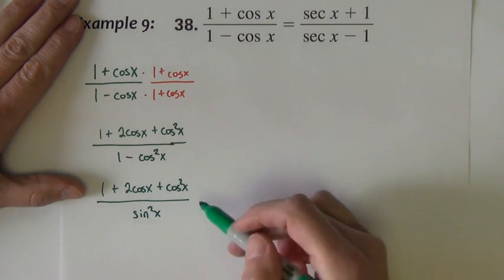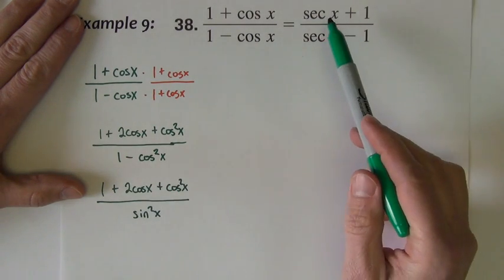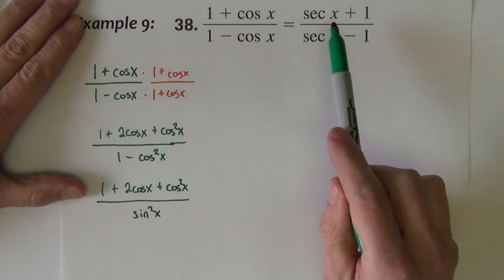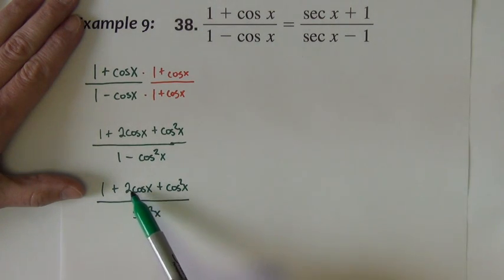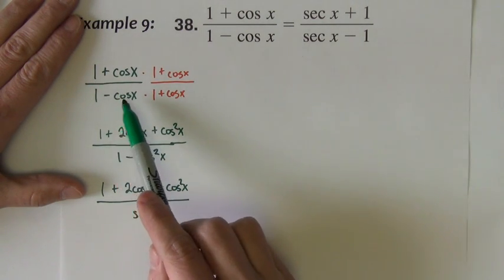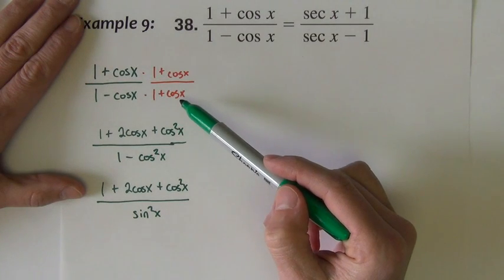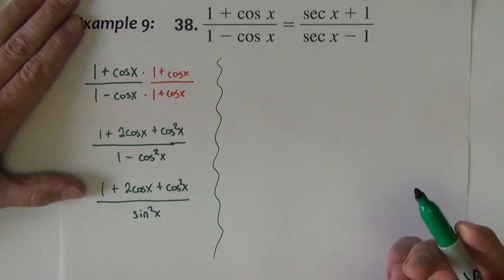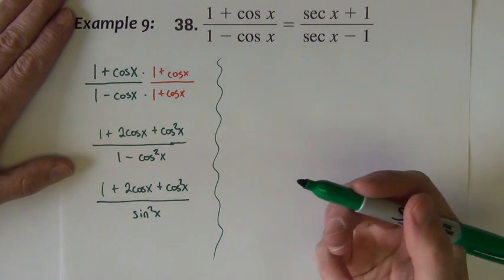But we're not really making any progress. Nowhere is this beginning to look like this. These are secants. Notice that this has two terms divided by two terms. Now I started with two terms over two terms, now I've got three terms divided by one term. So my strategy of rationalizing here is not really taking me anywhere. It wasn't necessarily a bad thing to try, but it's just not helping.